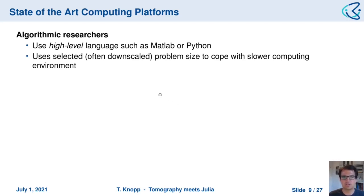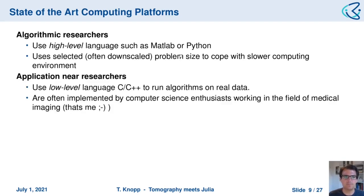First, we have the algorithmic researchers, who usually use a high-level language such as MATLAB or Python to show that their new algorithm performs better. However, since these algorithms are often computation-intensive, the algorithmic researcher uses selected, often downsampled problem sizes to cope with a slower computing environment. On the other hand, we have the application-near researcher, who really wants to apply algorithms to actual data to prove some clinical point. These use a low-level language such as C/C++ to run the algorithm on the true scale.